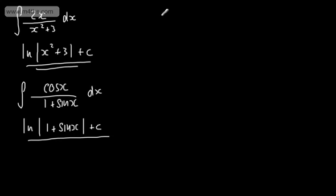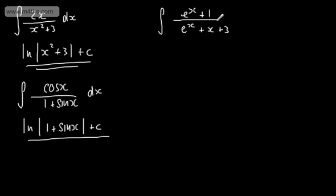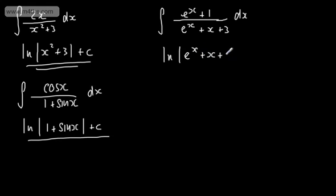If we had the integral of (e to the x plus 1) over (e to the x plus x plus 3), that looks quite daunting. But if we consider that the numerator is the derivative of the denominator, we can write this as the natural log of the modulus of (e to the x plus x plus 3) plus a constant of integration.